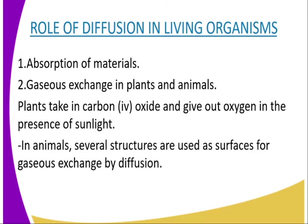The second role of diffusion is gaseous exchange in plants and animals. In plants, carbon dioxide is taken in and oxygen is given out in the presence of sunlight during photosynthesis. Some of the oxygen is used in respiration and the excess diffuses out into the atmosphere. At night, only respiration takes place, so plants take in oxygen and give out carbon dioxide as a waste product. These gases pass in and out of the plant through the stomata in leaves by diffusion.